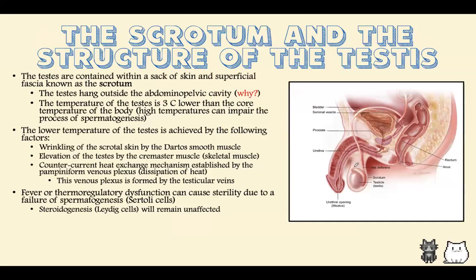The testes are contained in a sac of skin and superficial fascia known as the scrotum, hanging outside the abdominal pelvic cavity. This is because spermatogenesis requires a comparatively lower temperature than core body temperature. Body temperature is about 36–37°C, which is too high for spermatogenesis. If temperature is too high, spermatogenesis will not take place, leading to male infertility. The temperature of the testes is 3°C lower than core body temperature — this is to protect the process of spermatogenesis.